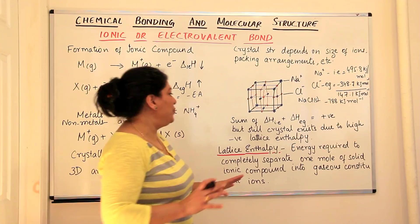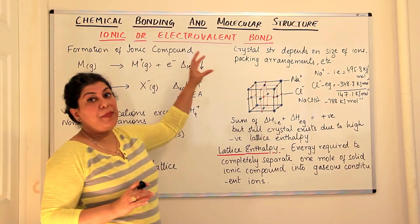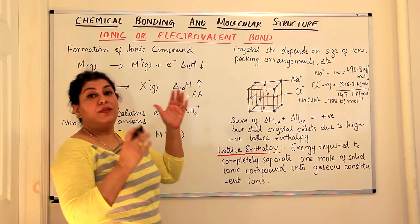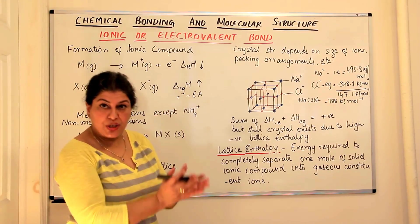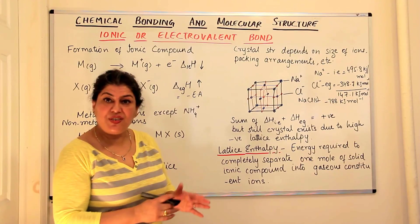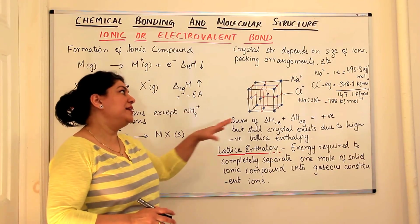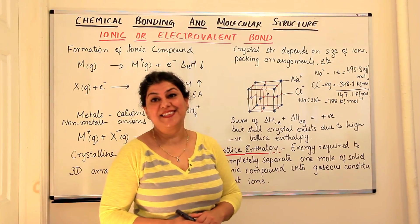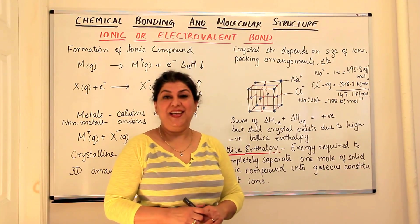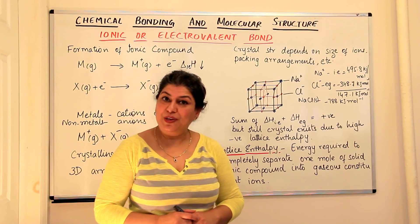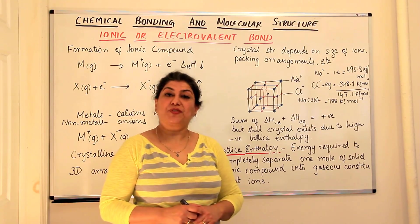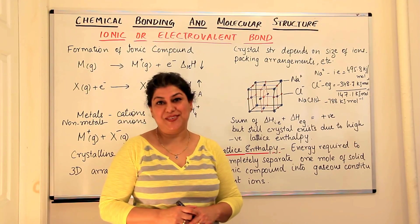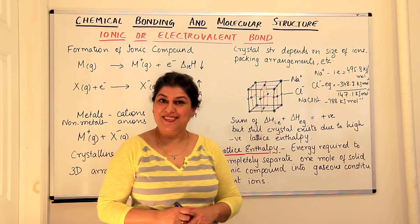From this we understand that when studying the stability and formation of electrovalent compounds, we have to consider the octet and electronic configurations, as well as the other energies associated — that is, the lattice enthalpy. If you found this video helpful, please give it a thumbs up, subscribe to my channel, recommend it to your friends, and please keep returning for more videos in chemistry. Thank you for watching, bye bye.